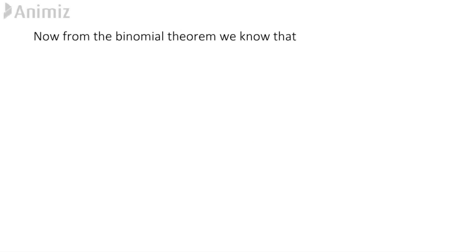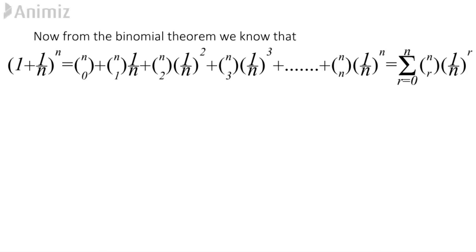From the Binomial Expansion Theorem we get: (1 + 1/n)^n equals nC0 — which is 1 — plus nC1·(1/n) plus nC2·(1/n)² plus nC3·(1/n)³, and the sum continues up to nCn·(1/n)^n.